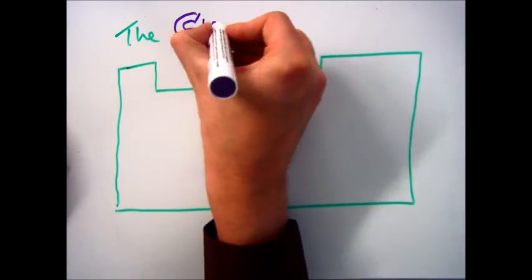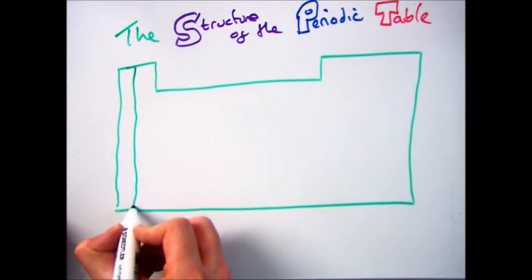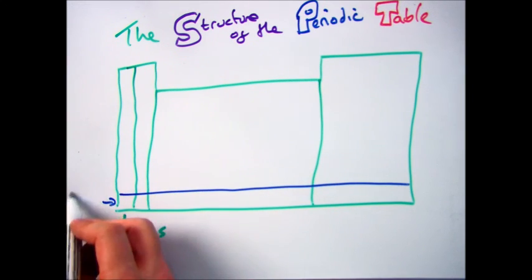Hello there and welcome to this video which is focusing on the structure of the periodic table. This should just be a quick recap to show that the groups are the columns that go down and the periods are the rows that go across.